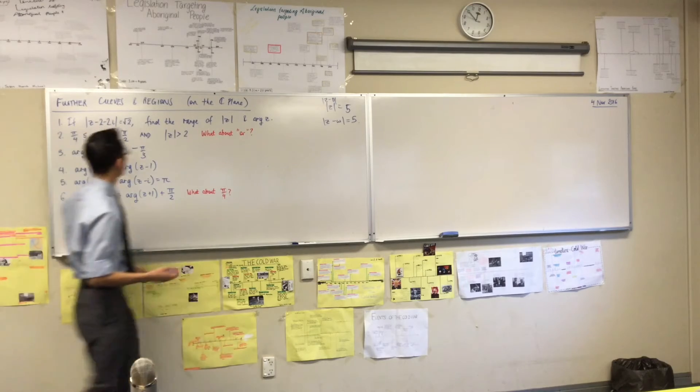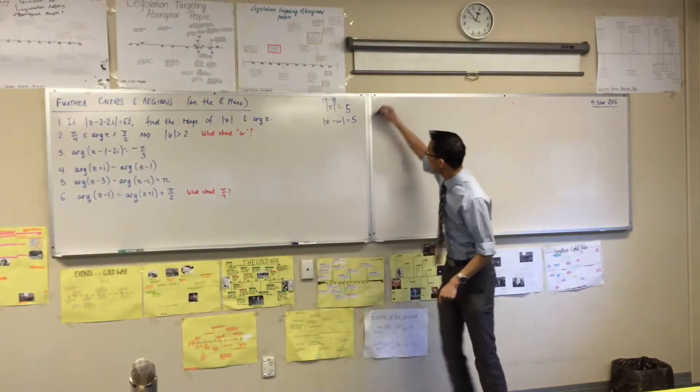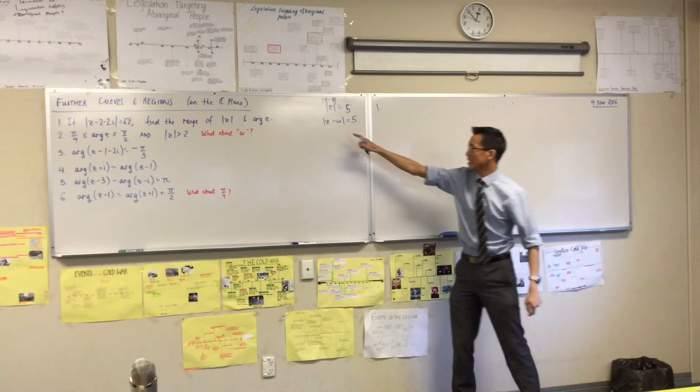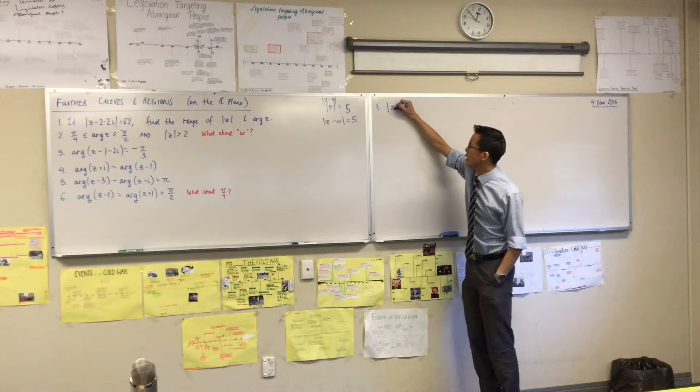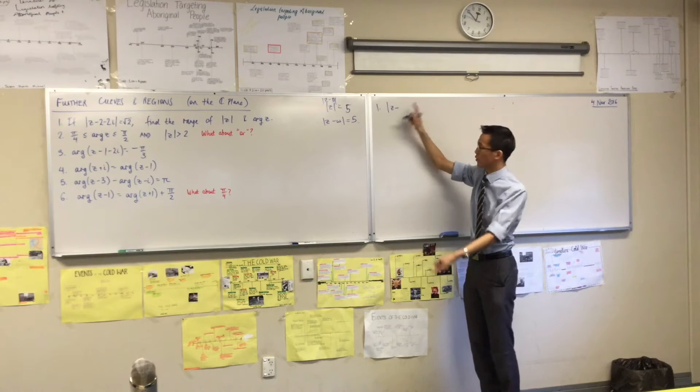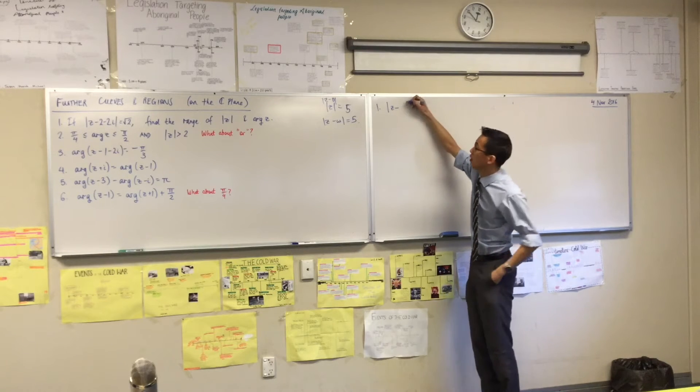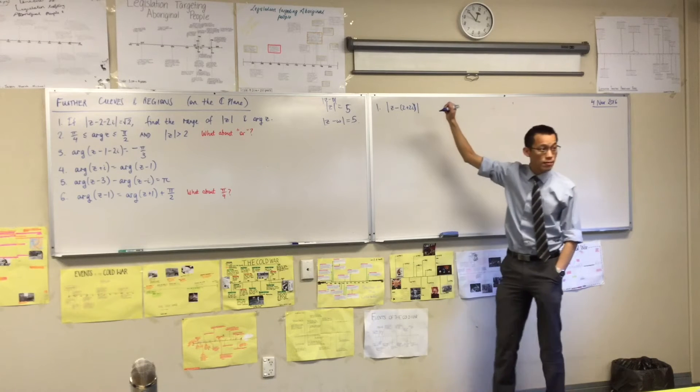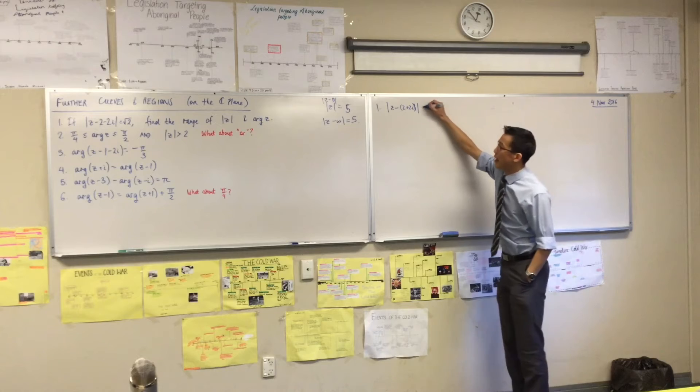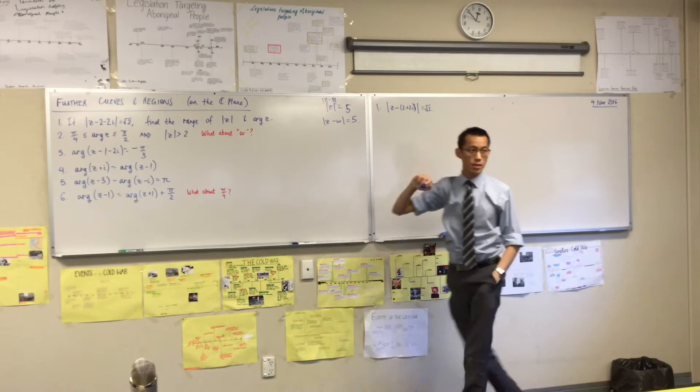And then where is the center going to be? 2 plus 2i. So the first thing I'm going to do as I solve this question is I'm just going to rewrite that in the right form to make it a little more obvious. This is modulus of z minus, and then I provide my point. So I've got to take that minus, that negative out. So that's going to be 2 plus 2i as you suggested. So there's my point of reference. And here is the radius I'm interested in.